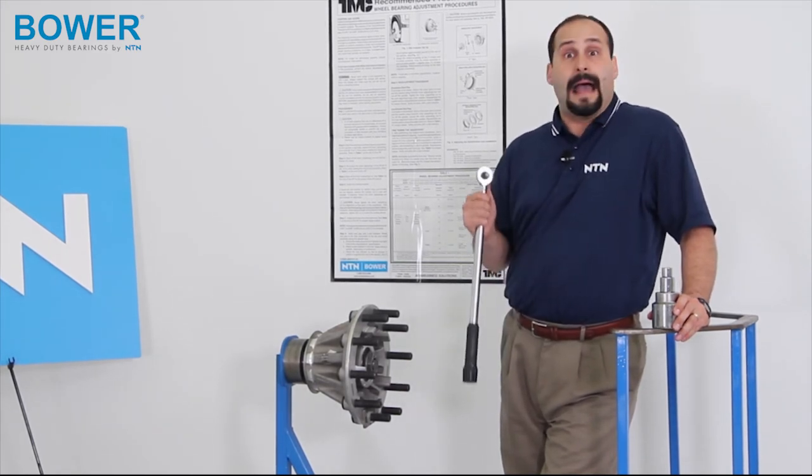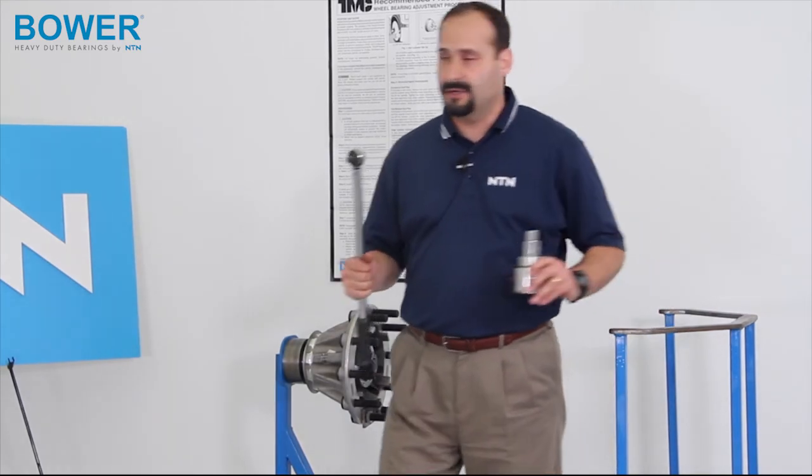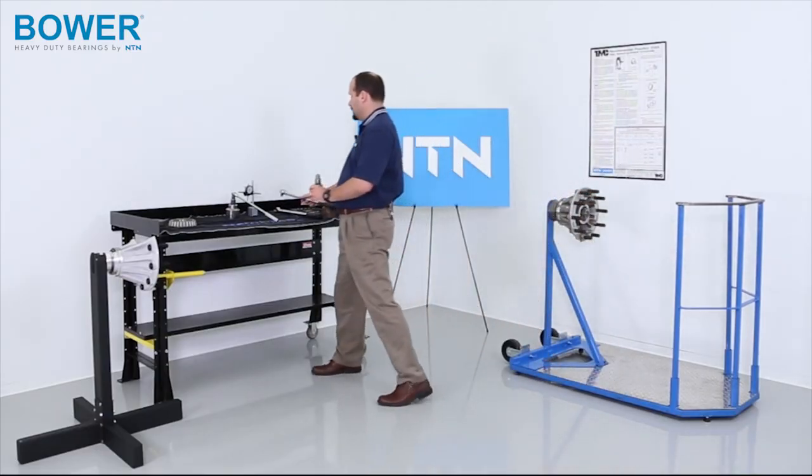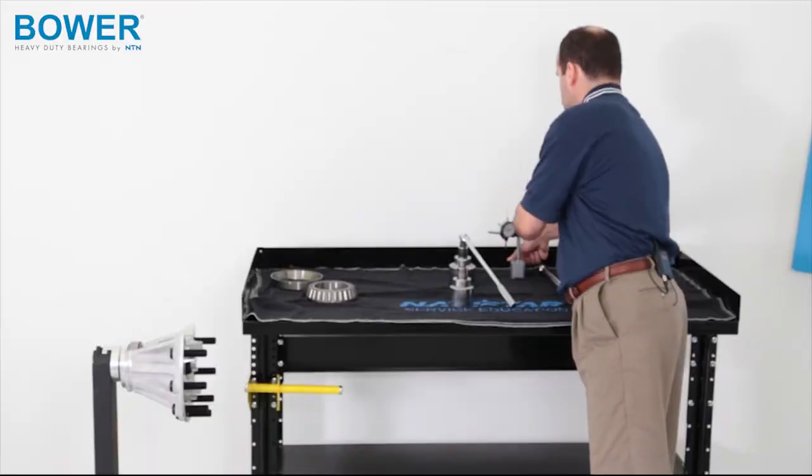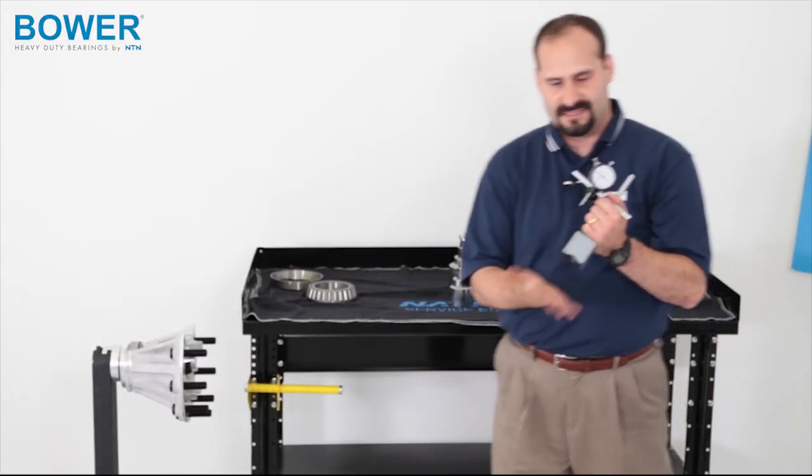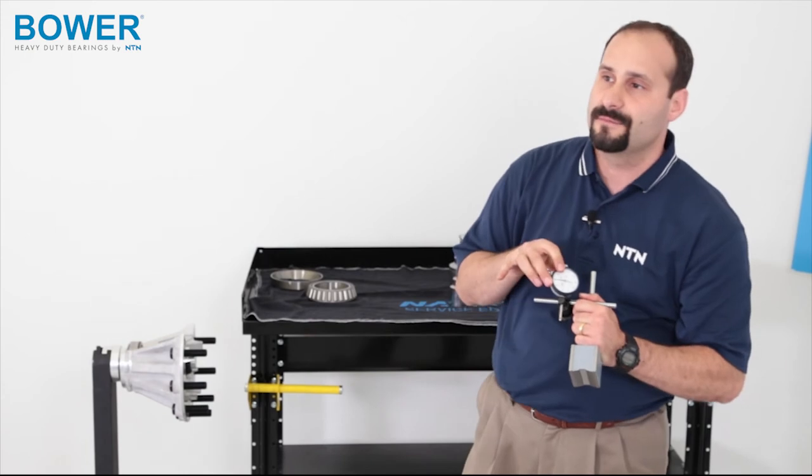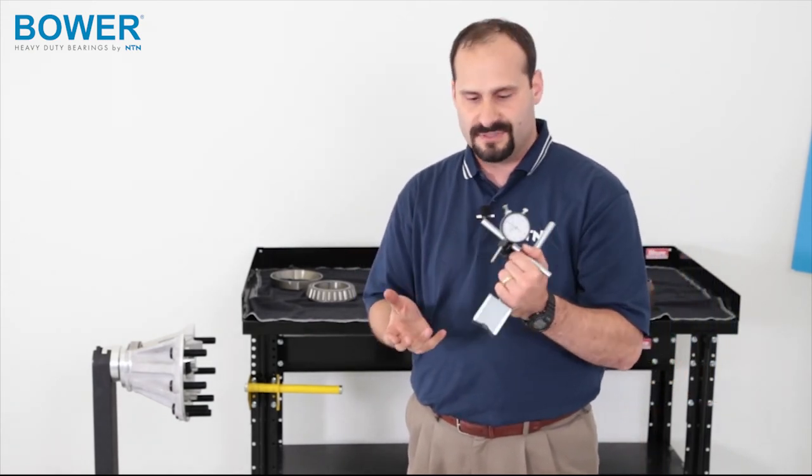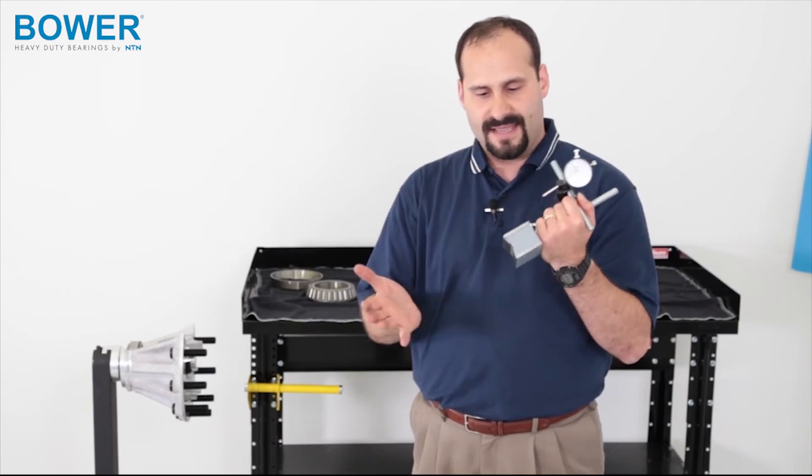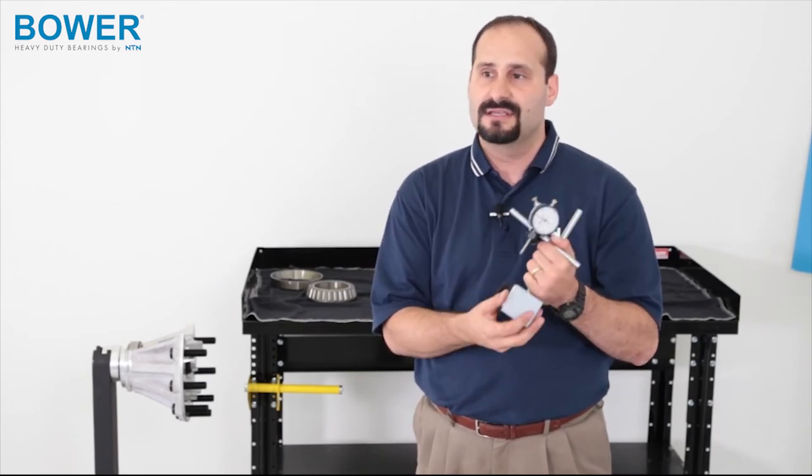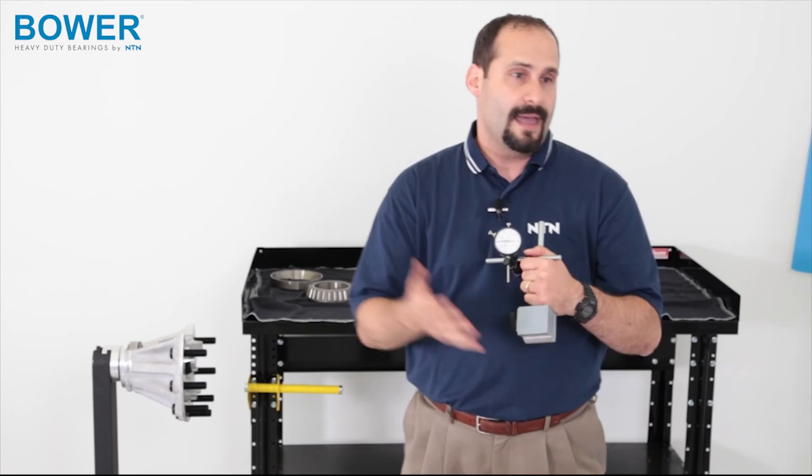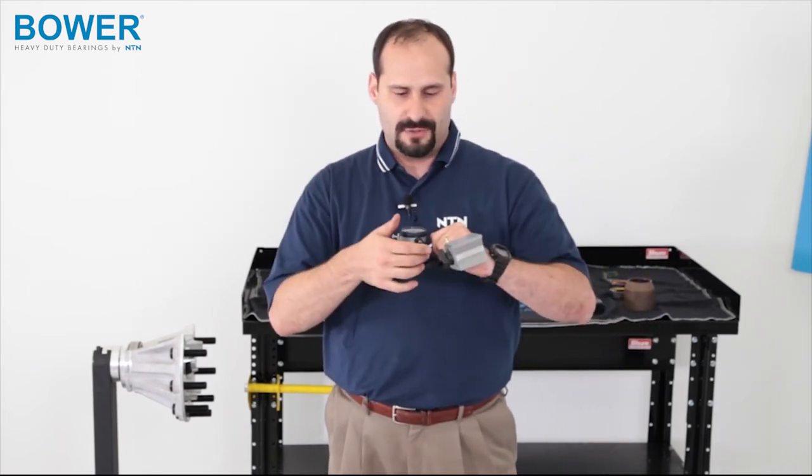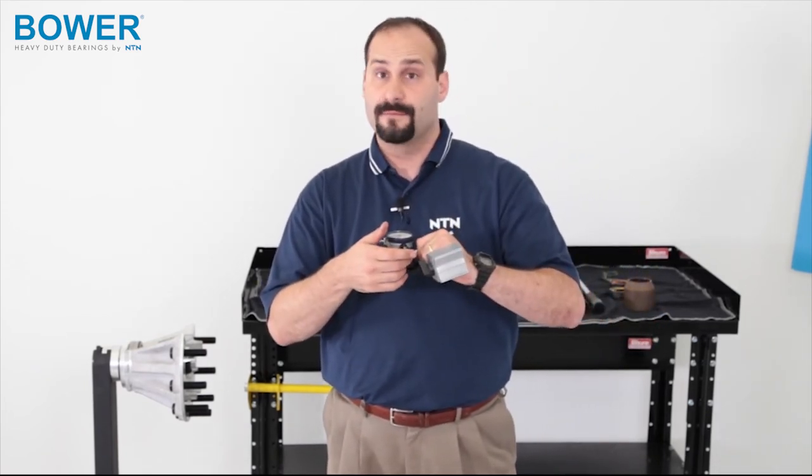So, the question goes out, how do I measure end play? Well, what you're going to have to do, you'll need to set up some kind of stand and a dial indicator for measuring the end play. This is one that we use. A lot of stands have magnetic bases so that you can easily go onto the hub and lock it down, and then you would position the dial indicator for measuring end play.